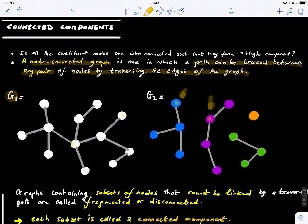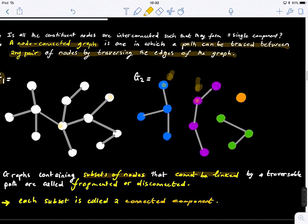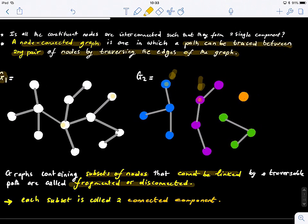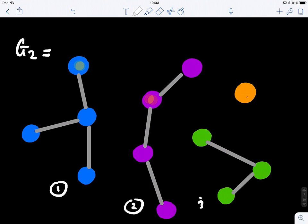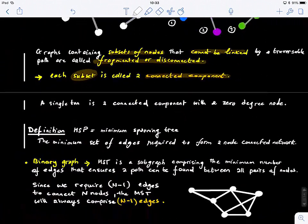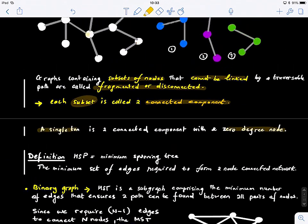So graphs containing subsets of nodes that cannot be linked by a traversable path are called fragmented or disconnected. So each subset here is called a connected component. So how many connected components we have here? So it's quite easy. So we have this is connected component number one, two, three. And singletons, a singleton is also a connected component. So it's like just by itself. Now, basically a singleton is a connected component with a zero degree node. So it's not connected to any other nodes.